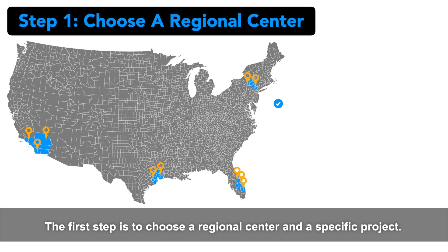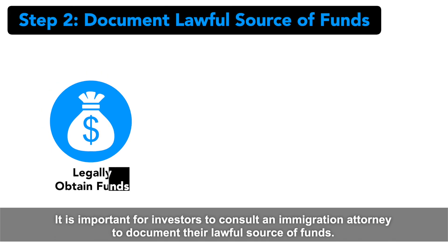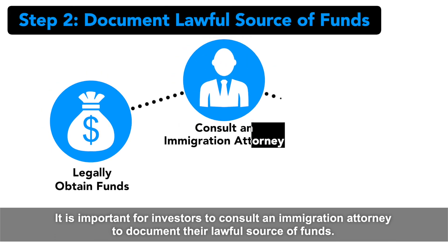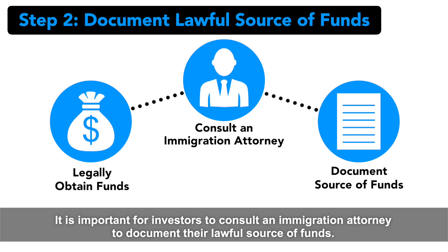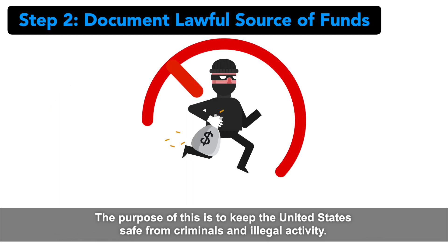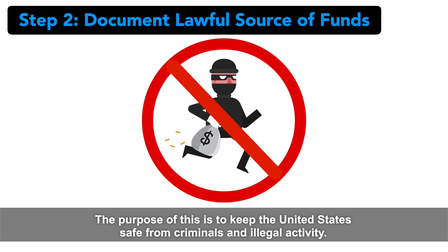The first step is to choose a regional center and a specific project. It is important for investors to consult an immigration attorney to document their lawful source of funds. The purpose of this is to keep the United States safe from criminals and illegal activity.